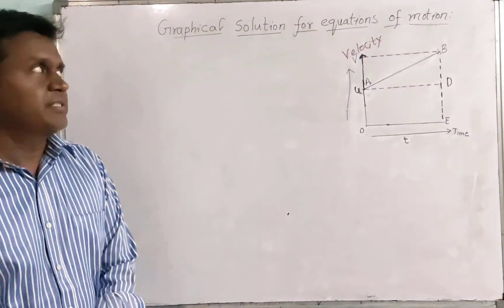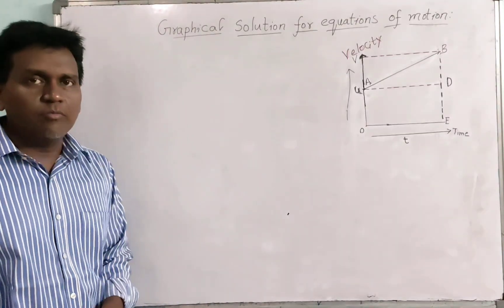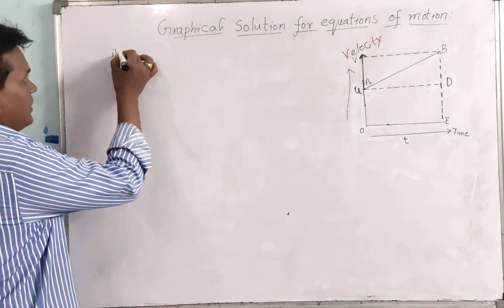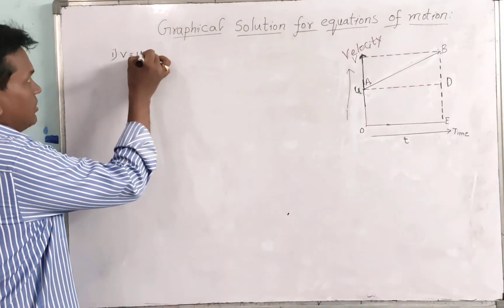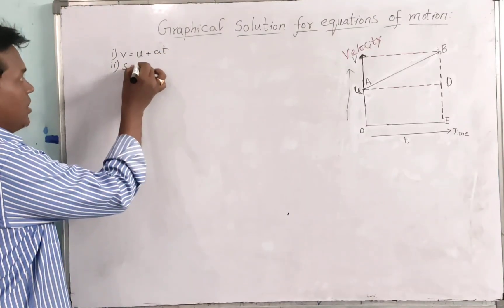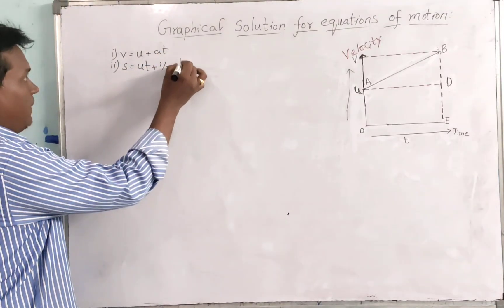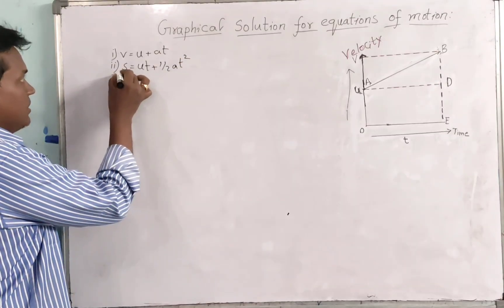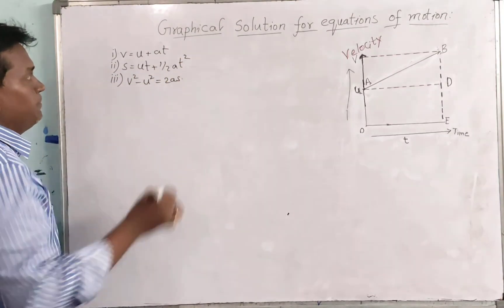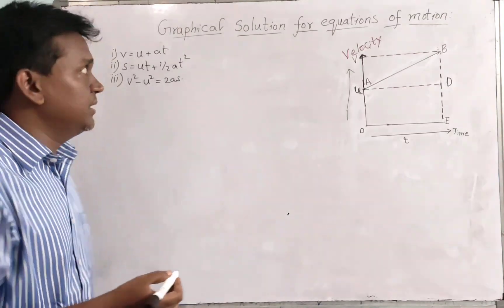In this class we are going to discuss the graphical solution for equations of motion. We know the three equations of motion: first equation V = U + AT, second equation S = UT + ½AT², and third equation V² - U² = 2AS. Let us look at these three equations using the graphical method.